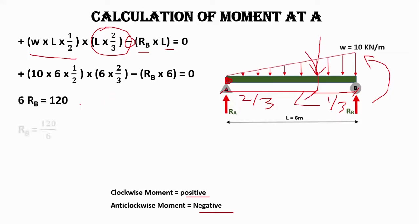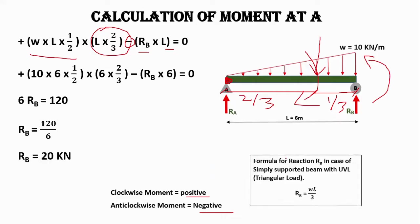After putting the values into the equation, we get the reaction RB equal to 20 kilonewtons. We can also use the simplified formula for triangular load on a simply supported beam: RB = wL/3.